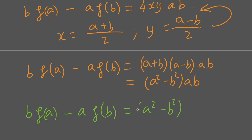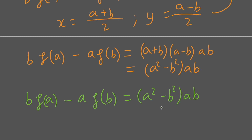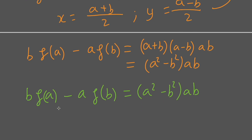The next step is to convert the equation so that f(a) contains only a and does not depend on p, and f(p) contains only p and does not contain any a variable.